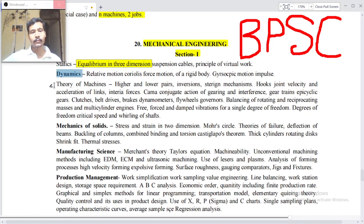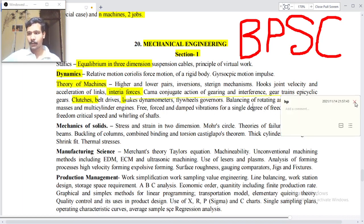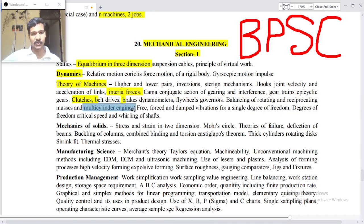Theory of machines - higher and lower pairs, inversions, kinematics, mechanisms, hooks joint, velocity and acceleration of links, inertia forces, conjugate action of gearing and interference, gear trains, epicyclic gears, clutches, belt drives, brakes, dynamometers, flywheels.